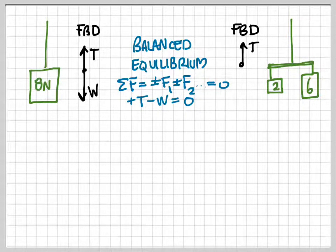In this case you'd have tension acting up. You'd have the 6 Newton weight acting down and also the 2 Newton weight acting down on the bar. And then looking at the free body diagram, you'd come to the conclusion that this situation to the right is balanced or in equilibrium.